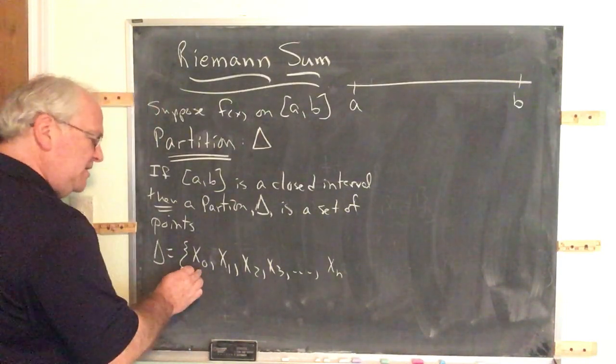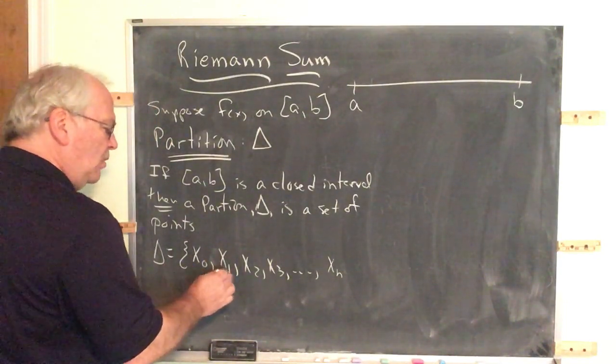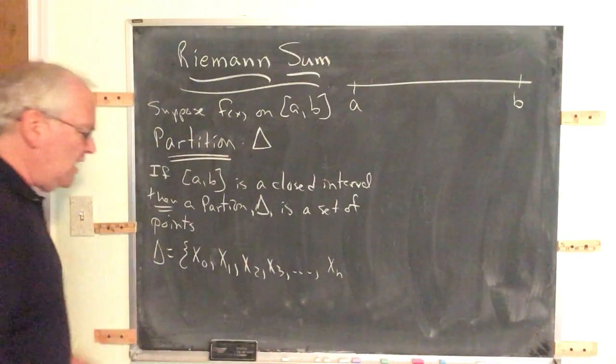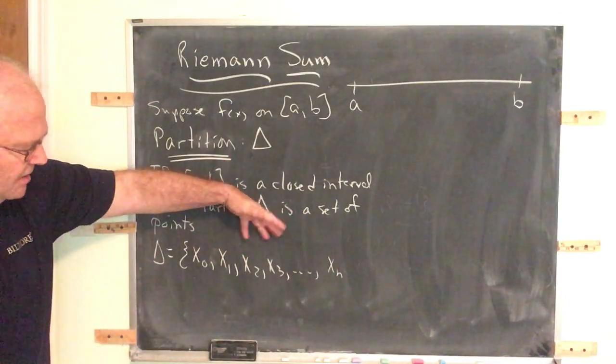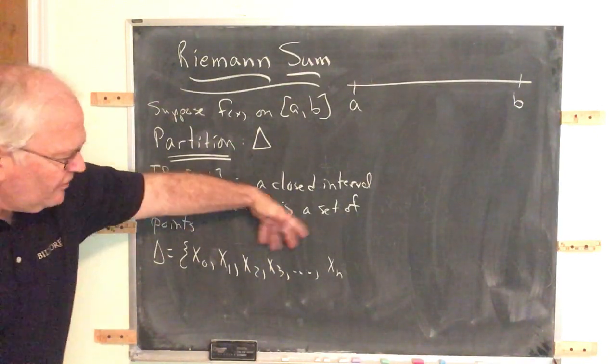So we have starting at zero: x1, x2, x3, and so on. Now notice the number of points—I'm not finished with this symbolism yet.